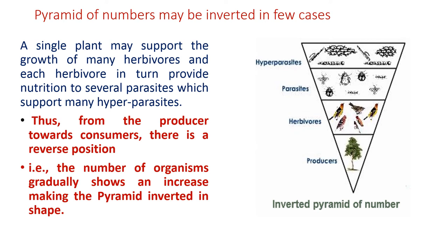A single plant may support the growth of many herbivores, and each herbivore in turn supports several parasites, and these parasites in turn support several hyperparasites. So from producers to hyperparasites, the number will be increasing, and our pyramid is inverted in shape — the apex becomes the base and the base becomes the apex. The number of organisms gradually shows an increase, making the pyramid inverted in shape.